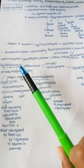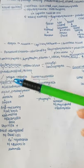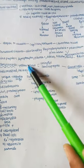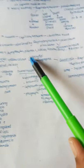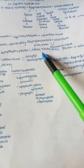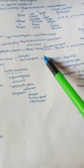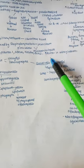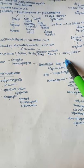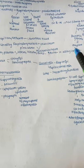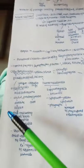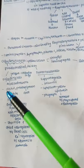Next comes the lamina propria, which contains lymphocytes, plasma cells, macrophages, neutrophils, and eosinophils. There are more eosinophils especially in allergic rhinitis or the common cold.